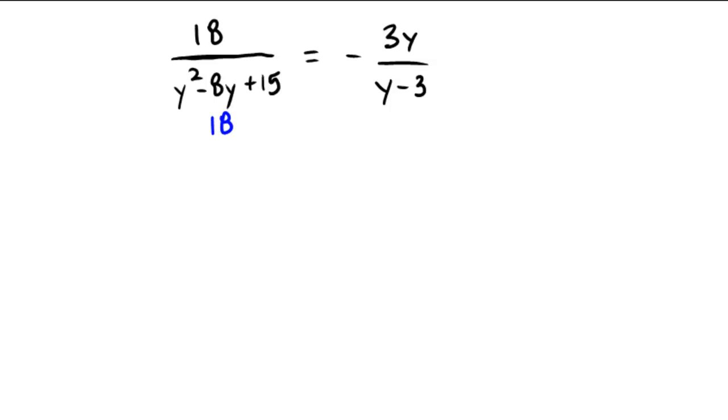So assuming you gave it a shot here, let's do it together. 18 over y minus 3 times y minus 5 equals negative 3y over y minus 3.